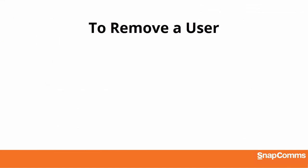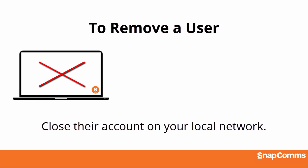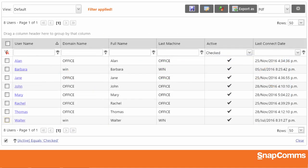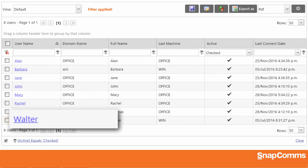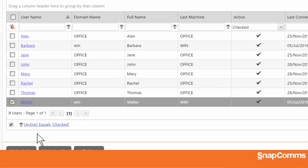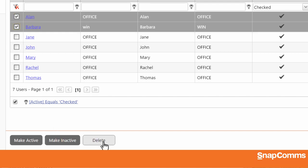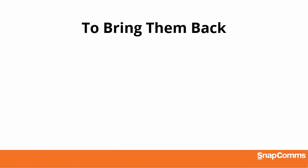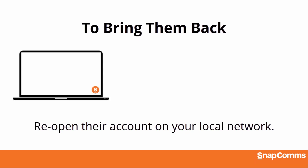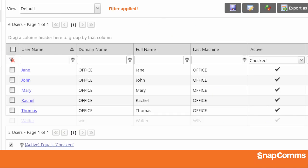One more thing — removing a user when they leave your organization is easy. Simply close their account on your local network. If they can't log into their PC to run the Snapcoms app and they can't access your server, then they won't receive any messages. They will, however, continue to appear as an active user even though they can no longer receive your messages. If you'd like to hide their name, you can select the appropriate user and click Make Inactive at the bottom. You can even select several users and make them all inactive or delete them entirely. And of course, if you ever decide to bring them back, you can just reopen their account on your network. Once they can access the Snapcoms app on their PC and the messages on your server, they'll start receiving your messages again and they'll reappear on your list as an active user.